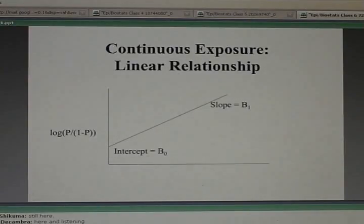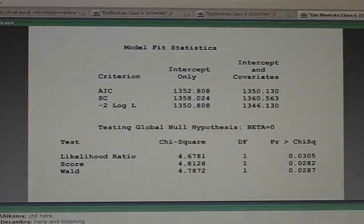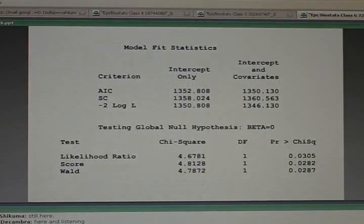would be your log odds of disease if you're a non-smoker. One pack a day smoker might have a log odds of disease at that point in this straight line. Two pack a day smoker would be further along, then three pack a day smoker. That's what the model is assuming. What do you get for output? Here's the model fitting. Here's statistics. Here's your test of significance.